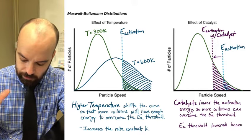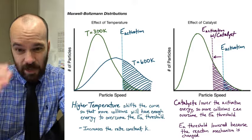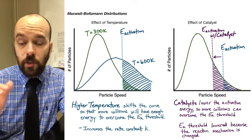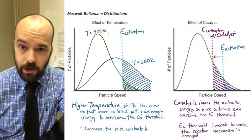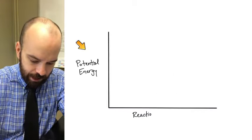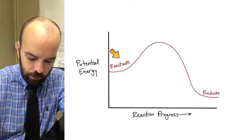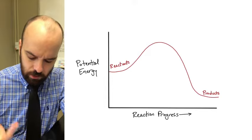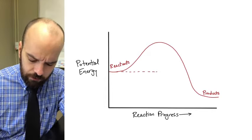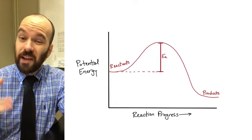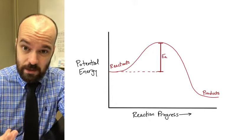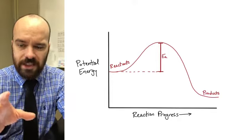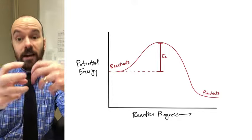Catalysts lower the activation energy so more collisions can overcome the activation energy threshold. The activation energy threshold is lowered because a catalyst actually changes the mechanism — the steps that a reaction goes through. To see what I mean, let's look at an energy profile diagram showing potential energy over the course of the reaction. I'll draw axes labeling the vertical axis potential energy and the horizontal axis reaction progress, going from reactants to products. This is an exothermic reaction with a relatively high activation energy barrier.